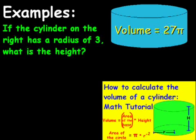Now, for our next example, I'm going to throw a little bit of a curveball here, or if you're pretty smart, it might be a change-up. So I have a cylinder on the right with a volume of 27 pi. And the question is going to be, if the cylinder on the right has a radius of 3, radius R of 3, what is the height?